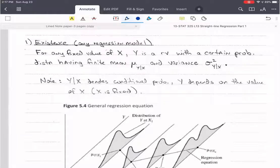This is the substance of what we're going to talk about in this video. And first, we have these five assumptions. The first one is existence, and this applies to any regression model, not just the straight line. So for any fixed value of x, y is a random variable with a probability distribution having a finite mean, mu of y given x. We're fixing x, so this is conditional probability. In regression, we talk about conditional probabilities. And then variance of y given x, again for the y given one x. So y given x denotes a conditional probability and y depends on that one value of x. And again, x is fixed, i.e. known.